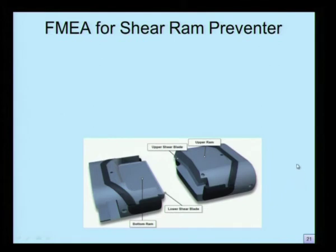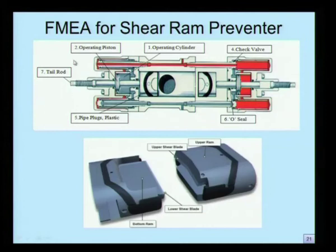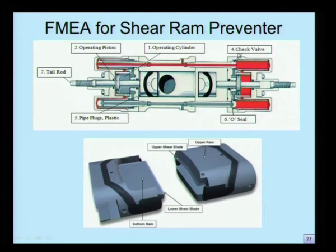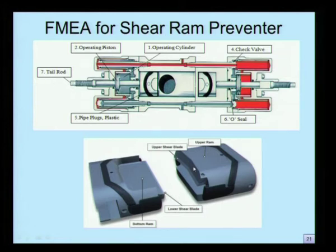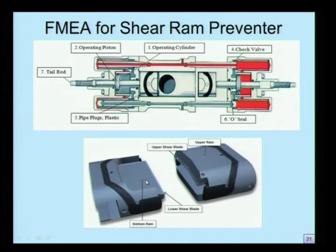Let us look at one more example of an FMEA for a shear ram preventer. This is another important component in a blowout preventer. It contains an operating cylinder and an operating piston, which moves forth and back to control the cylinder. This is sealed by an O-seal ring, and it operates as a check valve, which controls the exit and entry of liquid inside the container. There are also minor components such as pipes, plugs and plastic components. The shear ram blade consists of a lower blade, bottom ram, upper ram and upper shear blade. These two blades shear one over the other to cut and close the drilling stack — this is what we call a shear ram.